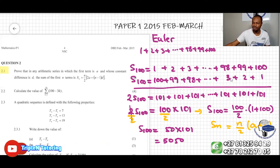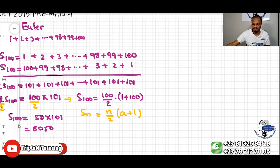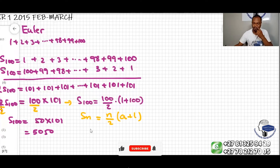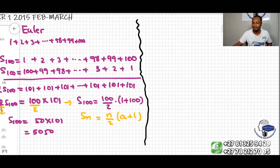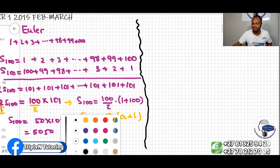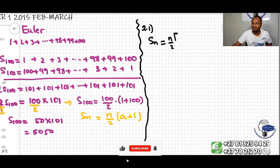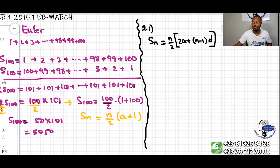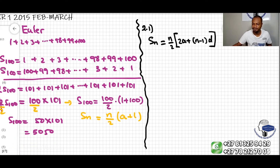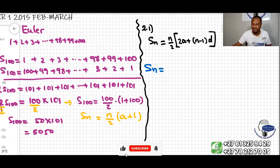Now we are going to solve the problem and prove that Sn equals n over 2, open square brackets, 2a plus n minus 1 times d. Let me write out my sum Sn. I want to pay attention here — the first term is a.